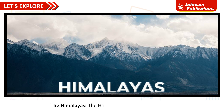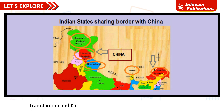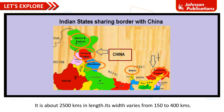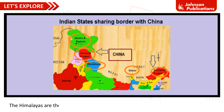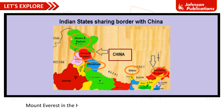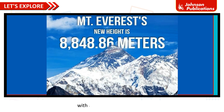The Himalayas extend in a long curve from Jammu and Kashmir in the west to Arunachal Pradesh in the east. It is about 2,500 km in length, and its width varies from 150 to 400 km. The Himalayas are the highest mountain range in the world and contain many high peaks. Mount Everest, at a height of 8,848 m, is the highest mountain peak in the world.